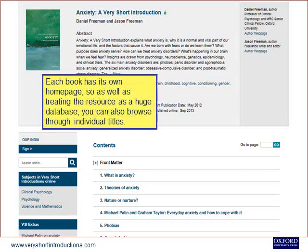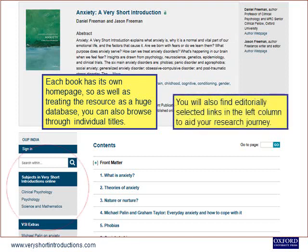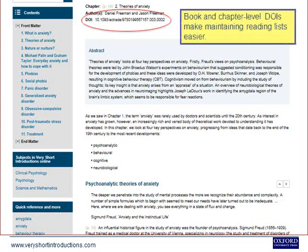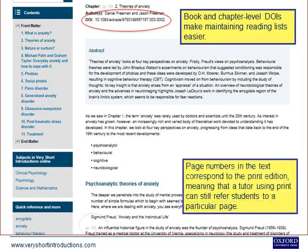Each book has its own homepage, so as well as treating the resource as a huge database, you can also browse through individual titles. You will also find editorially selected links in the left column to aid your research journey. Book and chapter level digital object identifiers make maintaining reading lists easier. Page numbers in the text correspond to the print edition, meaning that a tutor using print can still refer students to a particular page.